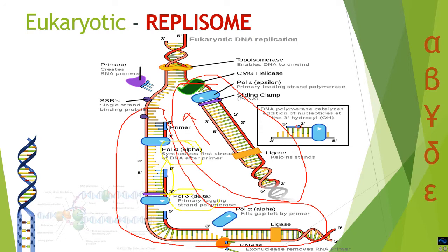There is a difference in the polymerases active in each strand. In the lagging strand, pol alpha and pol delta are active, while in the leading strand, polymerase epsilon is active. Before replication takes place, the DNA in duplex form — having two strands — has to be melted apart. The two strands must be prised apart.